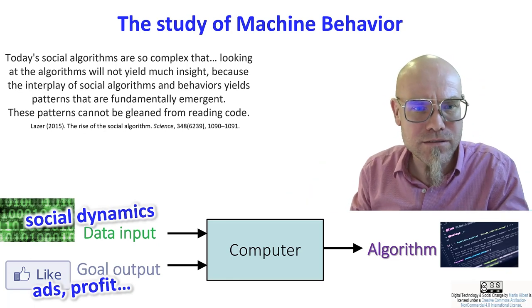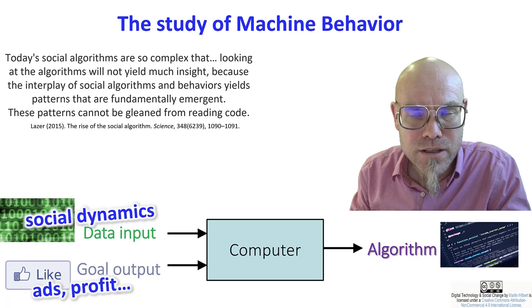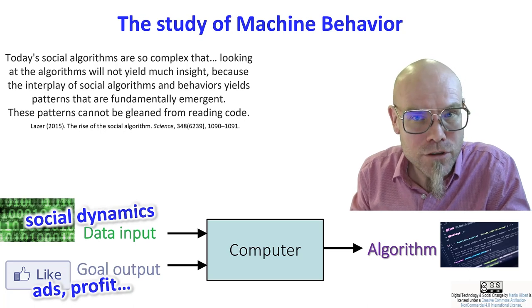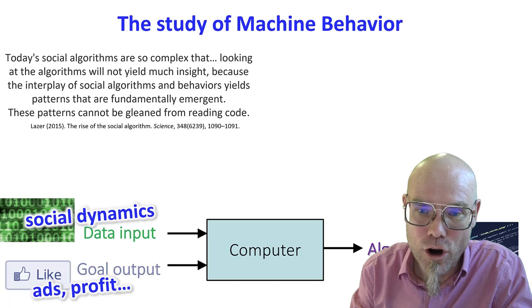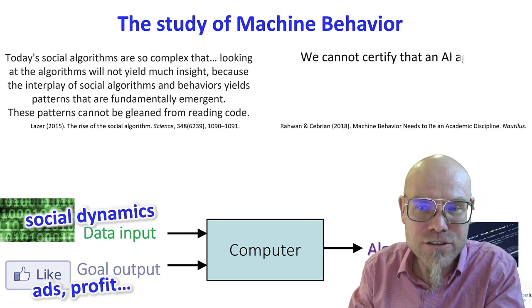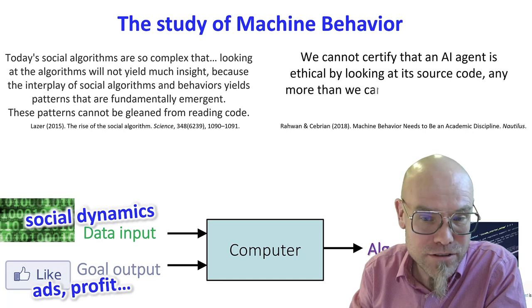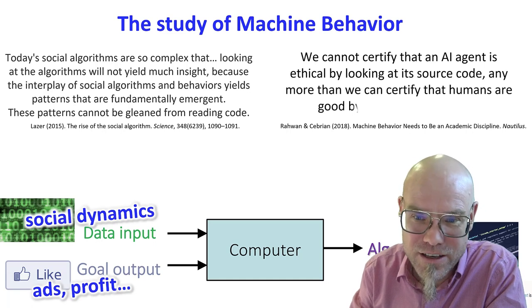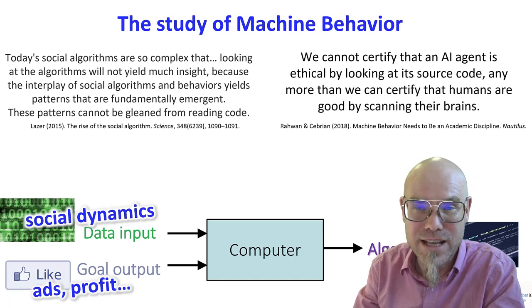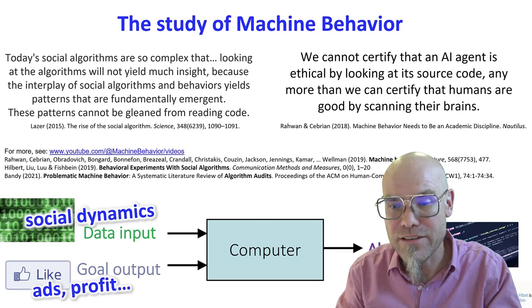Now, how can you then basically study what these social algorithms do? Well, you study them like you study humans—you run them through a lab, so you basically audit them. We cannot certify that an AI agent is ethical by looking at its source code any more than we can certify that humans are good by scanning their brains. All we can do is study their behavior.